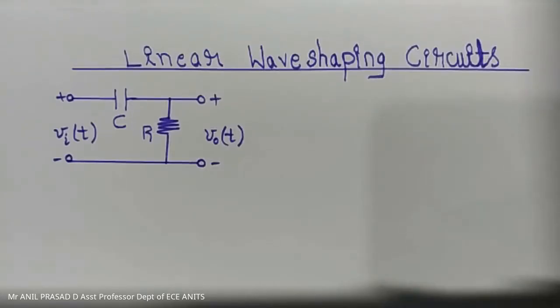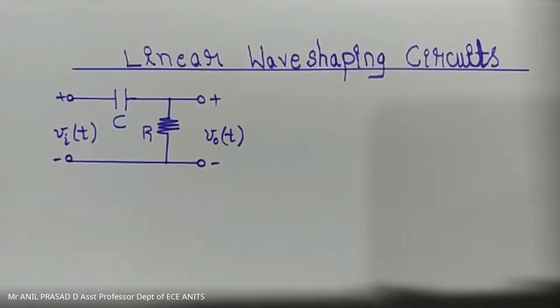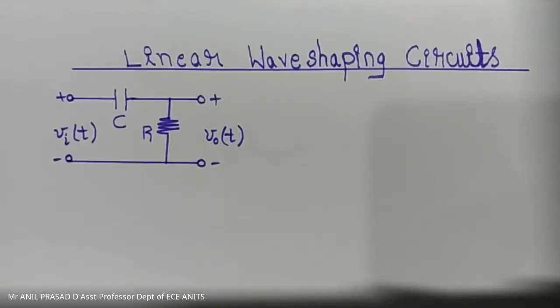Anyone having any questions related to RC integration? What is the condition for the RC low pass filter circuit to act as an integrator? The output should be proportional to the integration of the input signal. That is what gives the circuit the name integrator — if its output is proportional to the integration of the input signal.